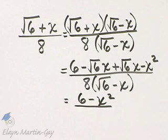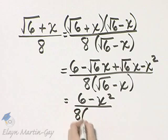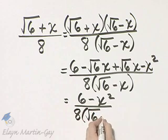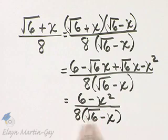And I'll go ahead and leave it in factored form in the denominator. So that's 8 times square root of 6 minus x. Whether you multiply it or not, it makes no difference, but I'll just leave it in factored form.